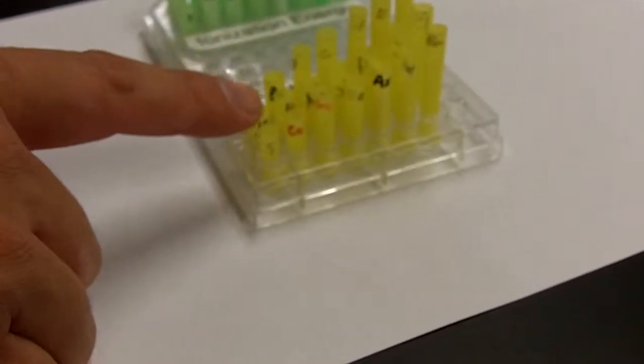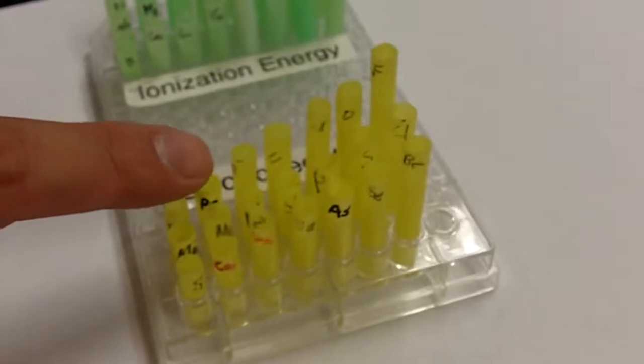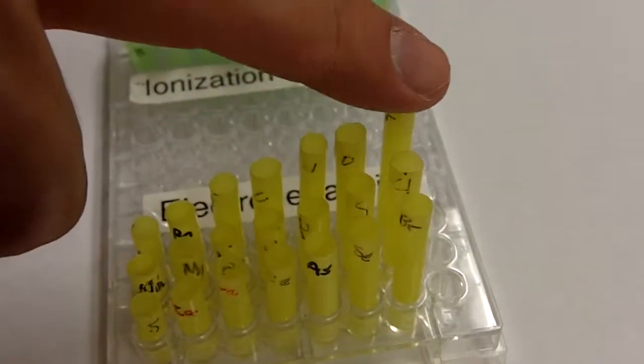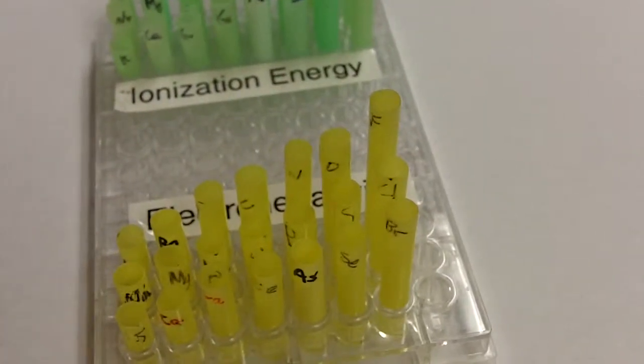It also decreases as you move down a family. But you can see it very clearly increases as you move across a period. When we get to fluorine, which is part of the halogen family, fluorine has the highest electronegativity.